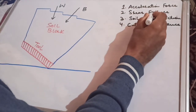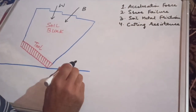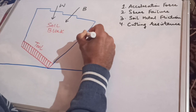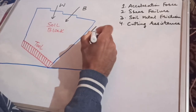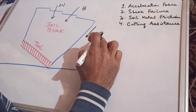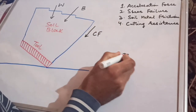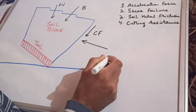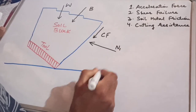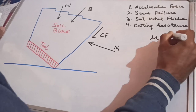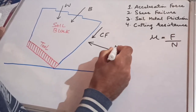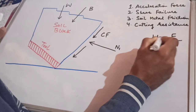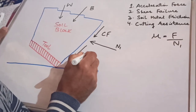There is also a shear failure plane, denoted by C×F, where C is the cohesion force between soil particles and F is the area of the forward failure surface. This soil particle generates a shear force and also a normal force, denoted by N1. Since the coefficient of friction equals force divided by normal force, this normal force also generates a friction force equal to mu×N1.